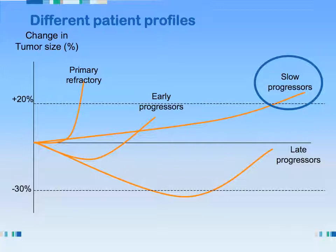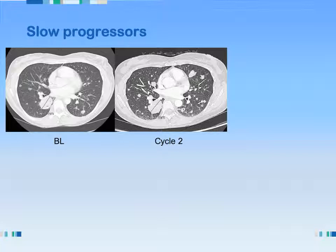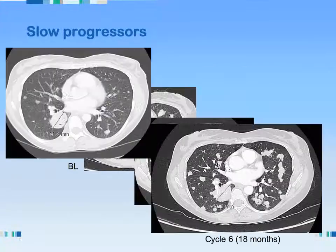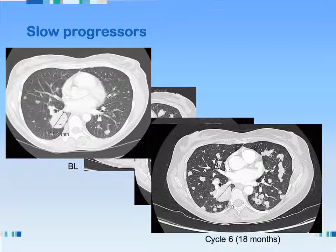Now these are the really hard ones: the slow progressors. I'm sure you all have these patients that slowly increase in tumor size. The question is, when do you decide that the progression is significant? Here's an example of a patient with a target lung lesion and several other lung lesions. Every two cycles, progressively, you see a few more lung lesions. Comparing cycle two to cycle four, there might be a little more — this is unequivocal progression. But looking back from baseline to cycle six — 18 months later — there is obvious progression. The problem is this progression was so slow that radiologists didn't necessarily detect it. When do you decide that it's too much?